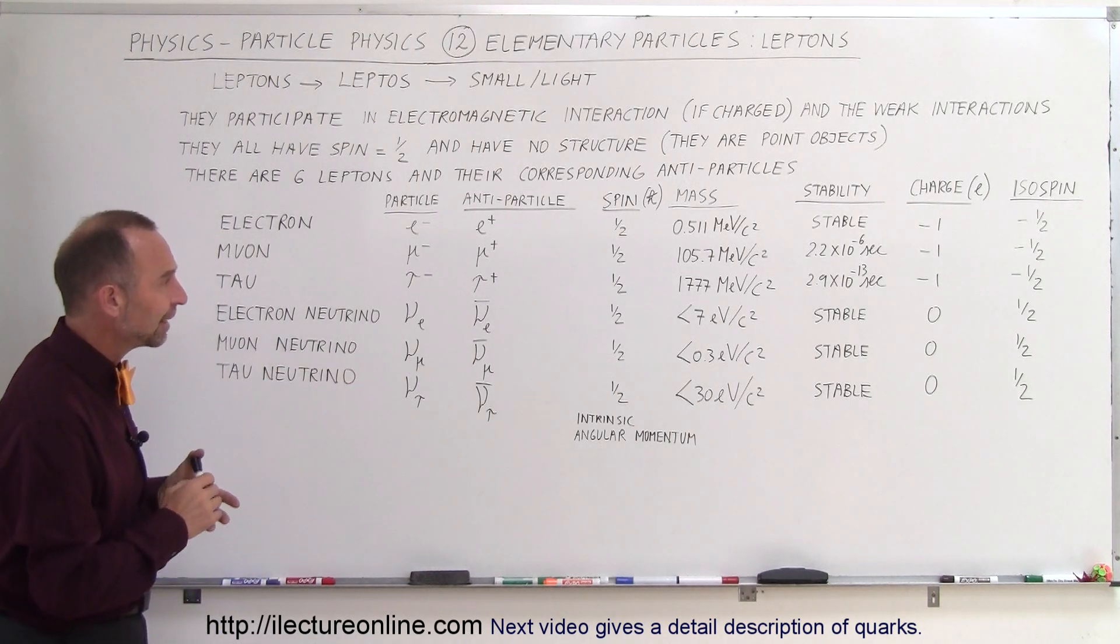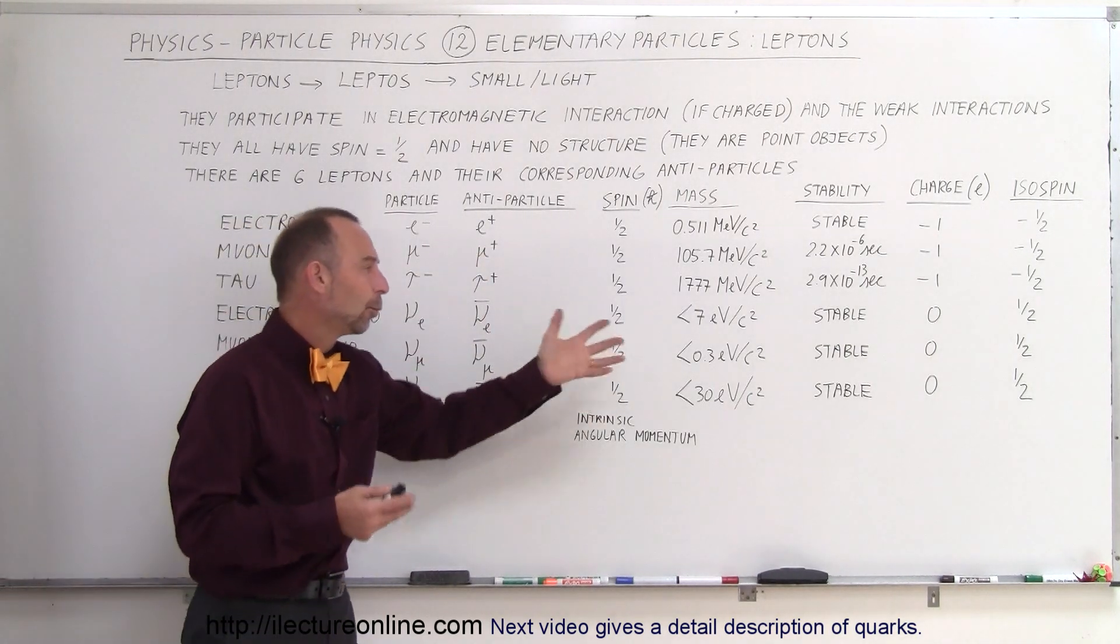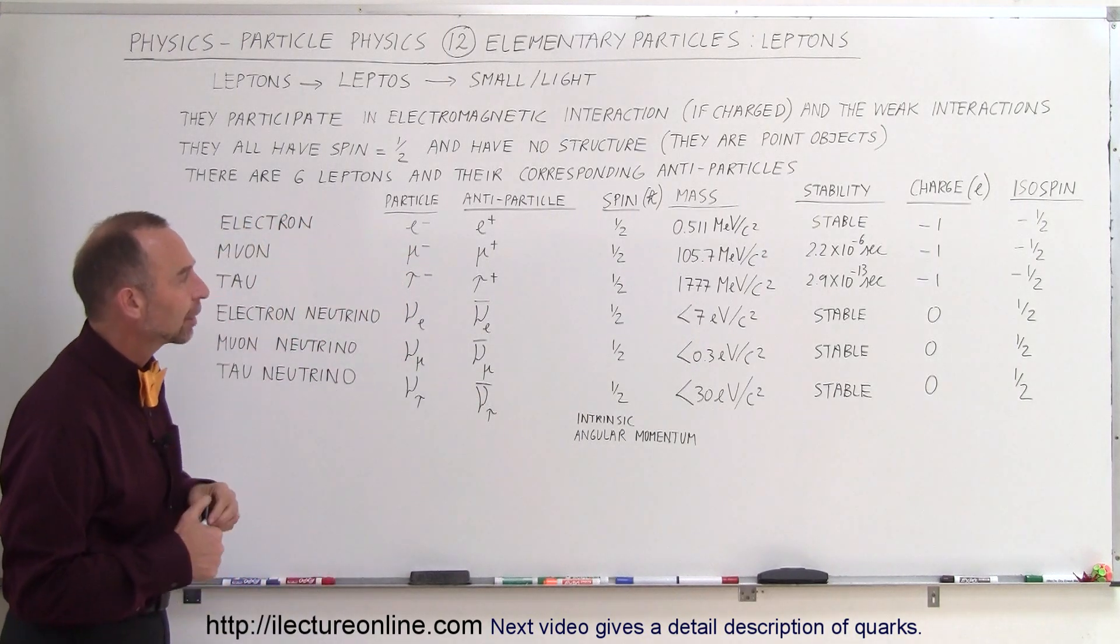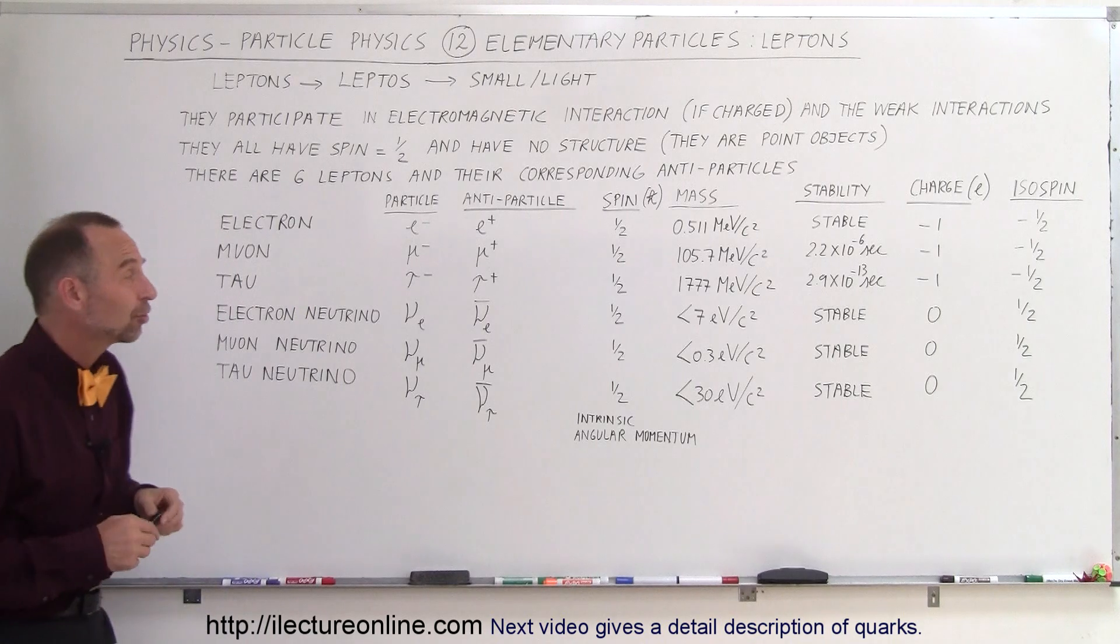So that gives you a very nice overview of what leptons are, how much mass they have, whether or not they're stable or not, whether or not they carry a charge and whether or not there's a spin, an angular momentum intrinsic spin associated with them.